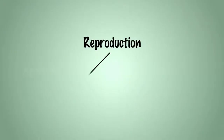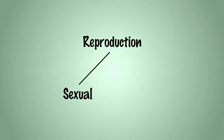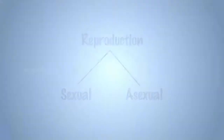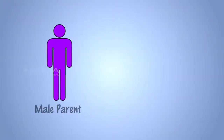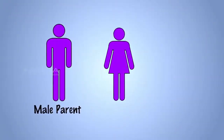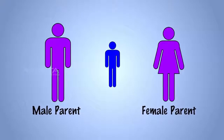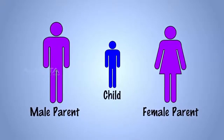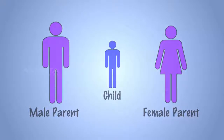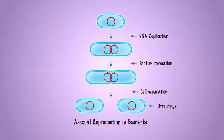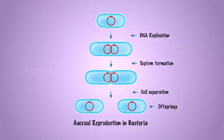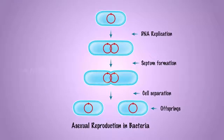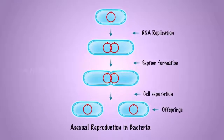There are two methods of reproduction: sexual and asexual reproduction. Sexual reproduction is the mode of reproduction in which the offspring arises from two parents of the opposite sexes. Asexual reproduction, on the other hand, is a reproduction in which the offspring arises from a single parent.